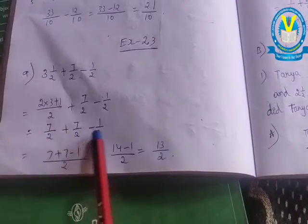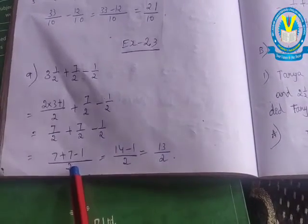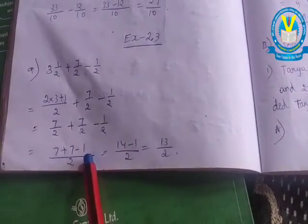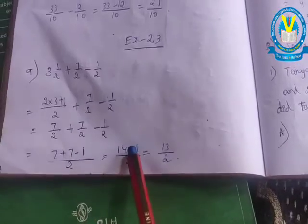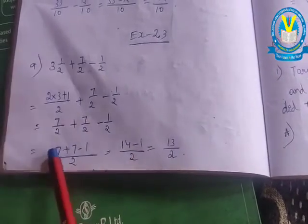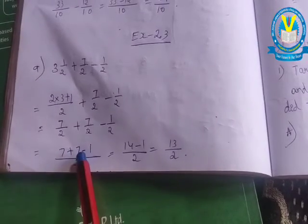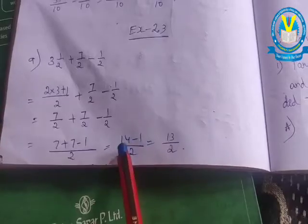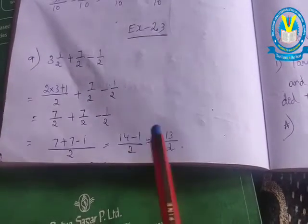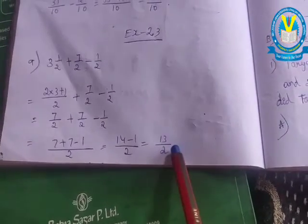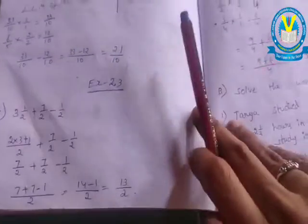You have to calculate with the same common denominator of two. Seven plus seven minus one in the numerator. Seven plus seven is fourteen, minus one is thirteen. First calculate the positive terms, then write the negative and do the subtraction. Finally the answer is thirteen by two.